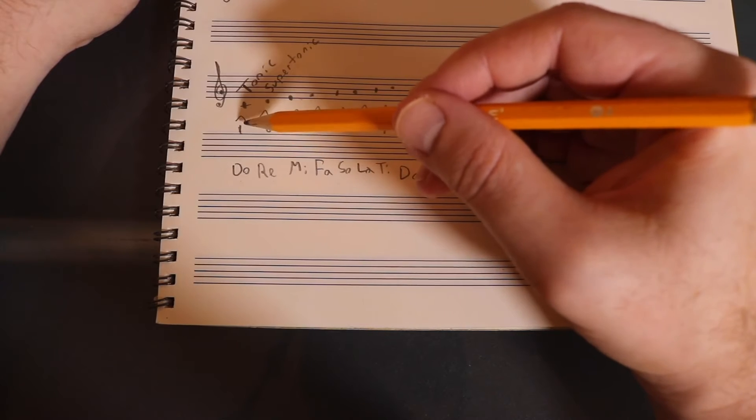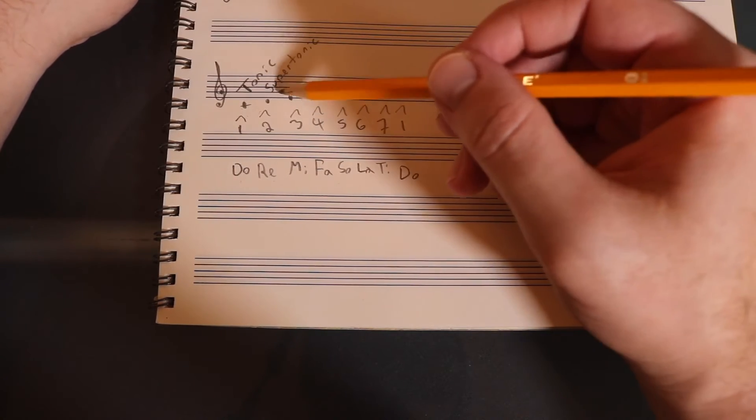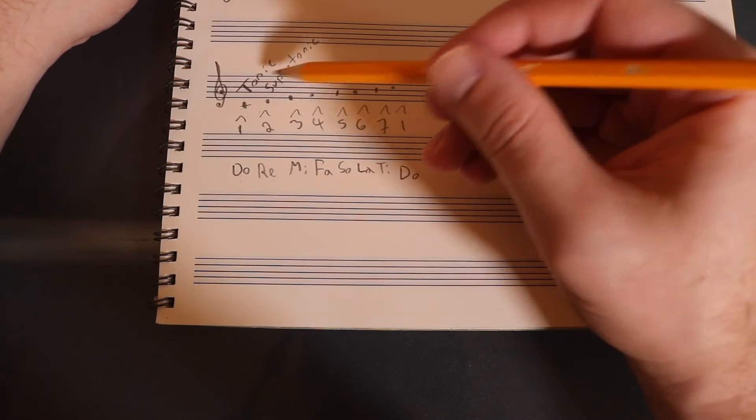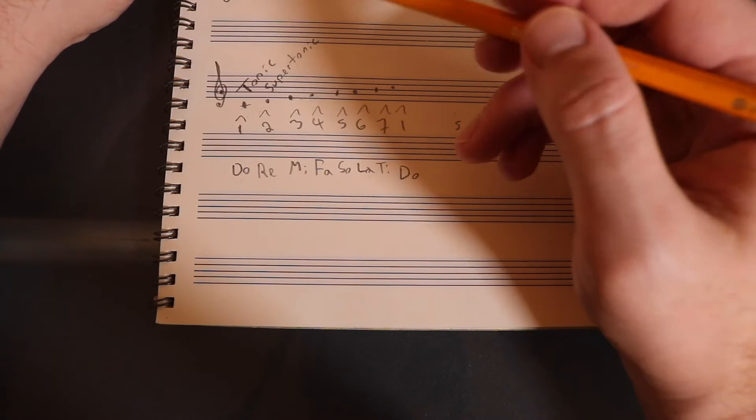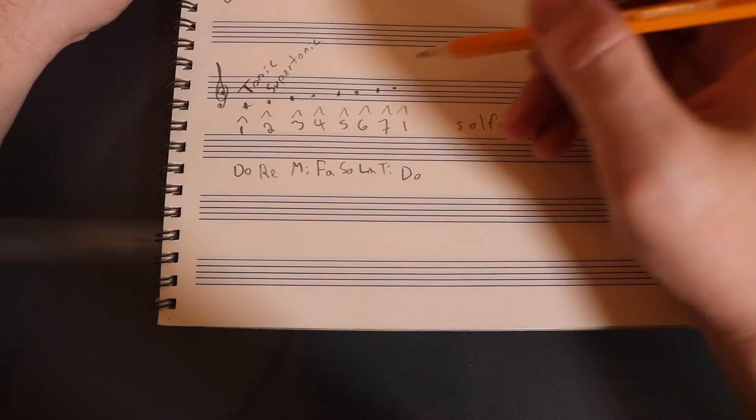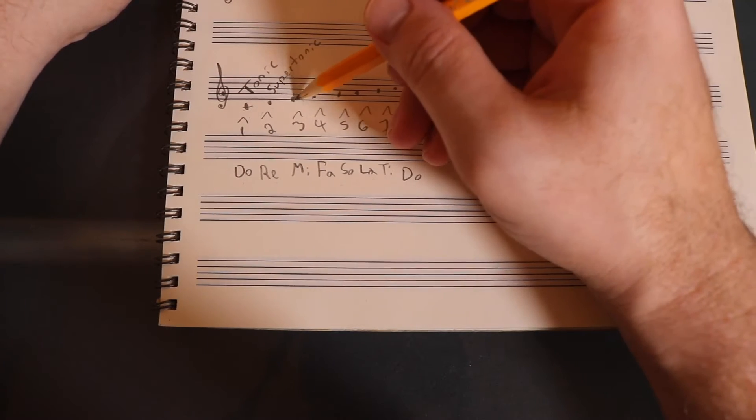Tonic is your first scale degree. Super means above, so above the tonic. I'm going to skip around and show you some other things. I'll show you this one first. The third one is called mediant. And now I'm going to skip all the way up here.